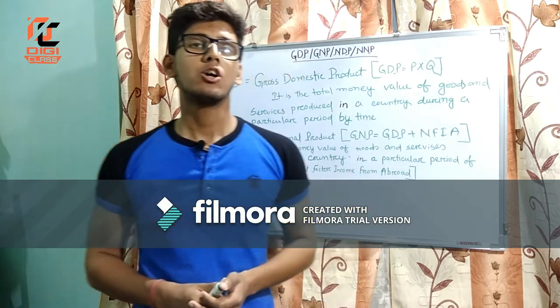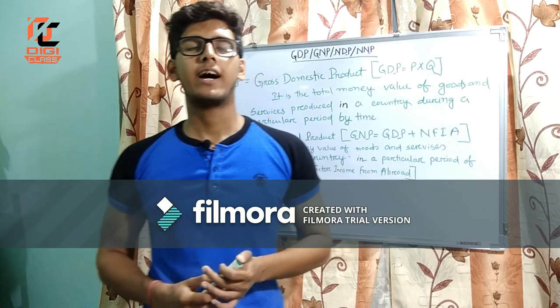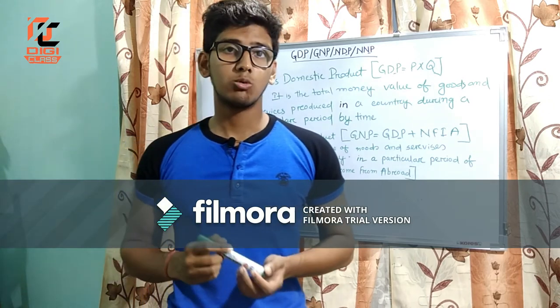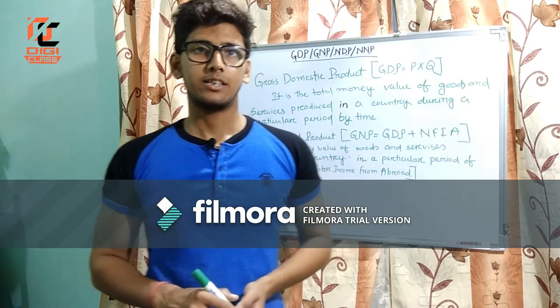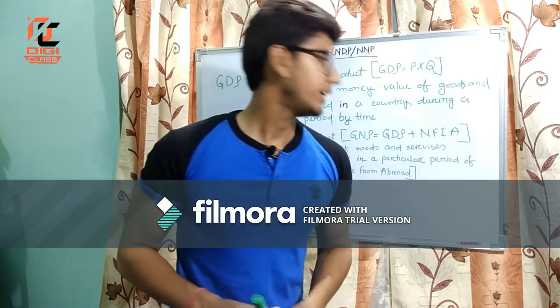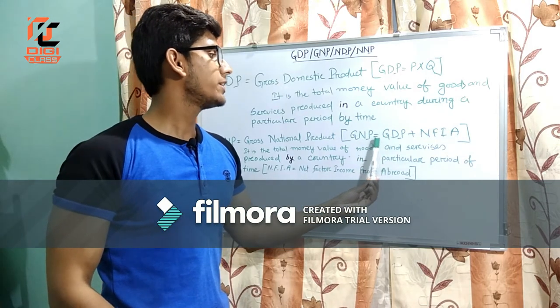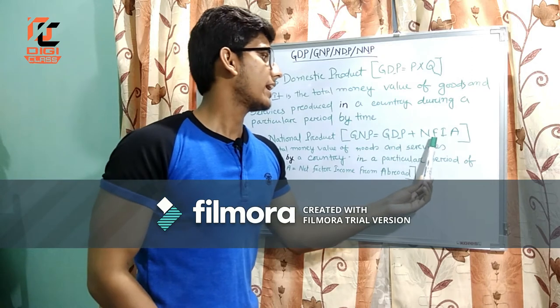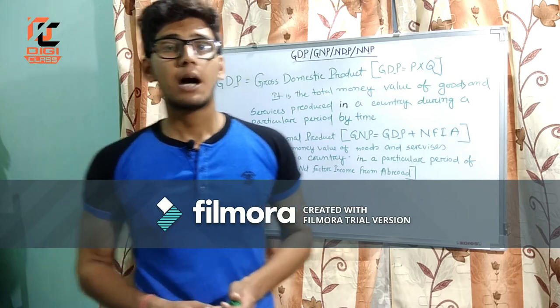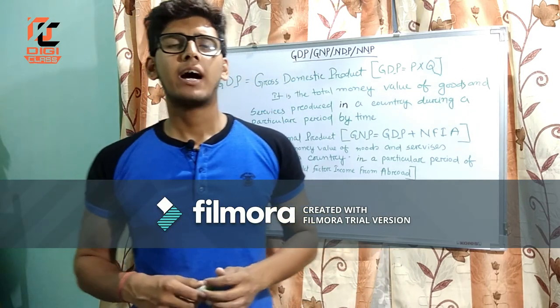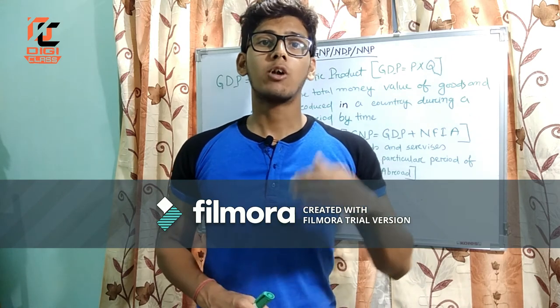Now let's understand what is GNP. GNP stands for Gross National Product and it can be defined as the total money value of the goods and services produced by a country. The formula for deriving it is GNP = GDP + NFIA, where NFIA means Net Factor Income from Abroad. It can be defined as the difference between factor income paid to the foreign factors and factor income earned by the domestic factors.